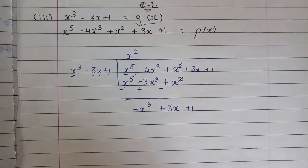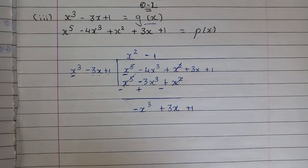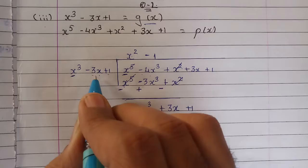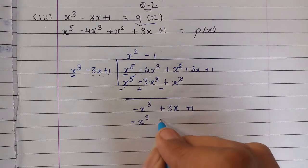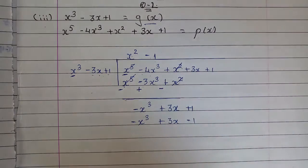-x³ divided by x³, both will cancel, giving us -1 itself. So x³ times -1 will be -x³, -3x times -1 will be +3x, and 1 times -1 will be -1.